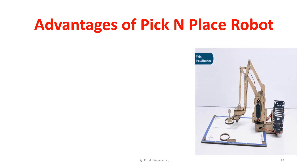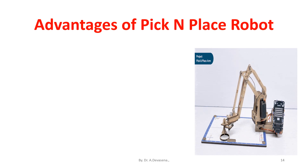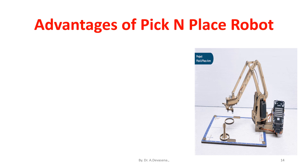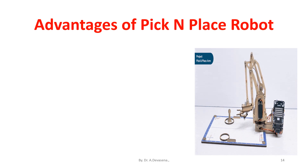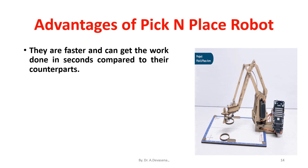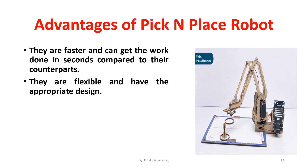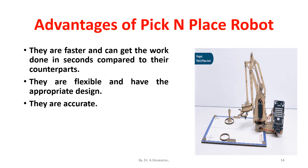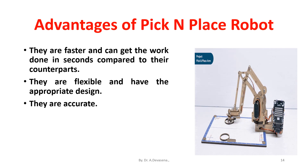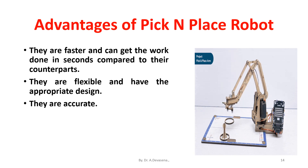Advantages of pick and place robots: they are faster and can get the work done in seconds compared to their human counterparts. They are flexible and have the appropriate design. They are accurate, they increase the safety of the working environment, and they never get tired.